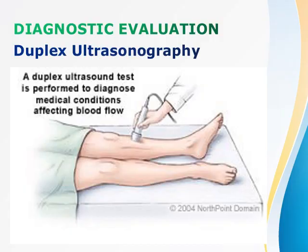Duplex ultrasonography is a non-invasive test combining Doppler and duplex technology, involving B-mode grayscale imaging of tissues to evaluate arterial and venous blood vessels. No preparation is required except for abdominal vascular evaluation, where the patient must fast for at least 6 hours to reduce bowel gases that may interfere with visualization of the aorta. It is the standard for diagnosing lower extremity venous thrombosis and ruling out aneurysm.